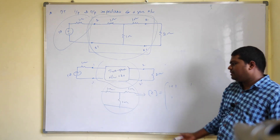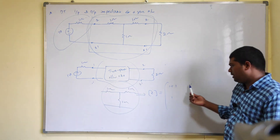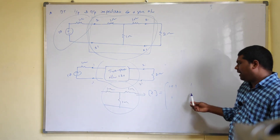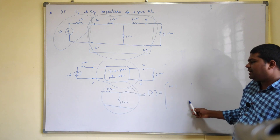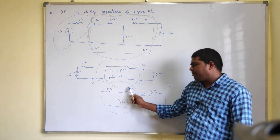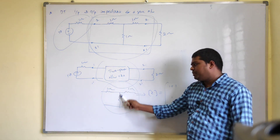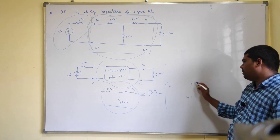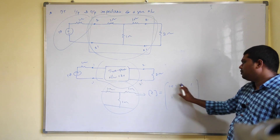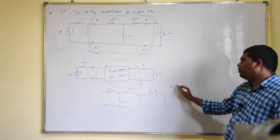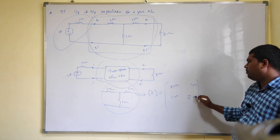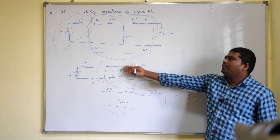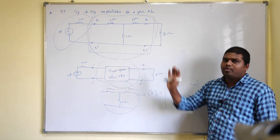ZC is nothing but one. Z12 is one, and Z21 is one. Z22 is the summation of these two elements, that is one plus one, which equals two ohms. So the Z-parameters are: Z11 = 2 ohms, Z12 = 1 ohm, Z21 = 1 ohm, Z22 = 2 ohms. These are your Z-parameters for the given two-port network, without load or source.